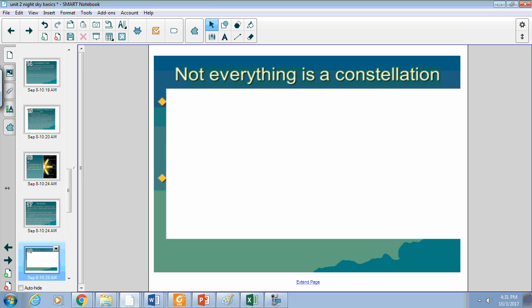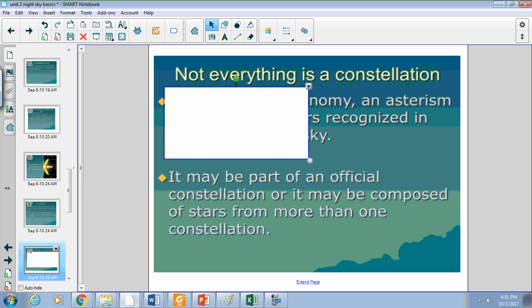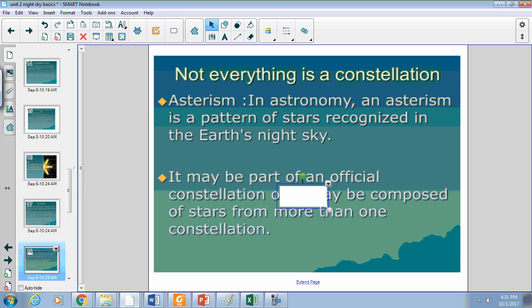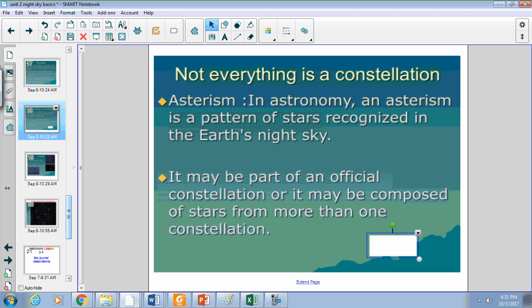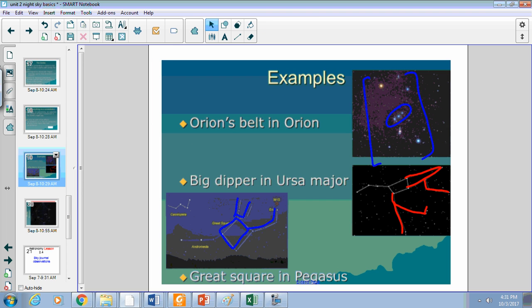That being said, not everything that you see in the night sky is a constellation. Some of them are only known as asterisms. Asterisms are kind of like a small recognizable pattern that you can find. Sometimes they're in a constellation, sometimes they're not. Sometimes they're made up of many constellations, but it's not part of the official constellation.